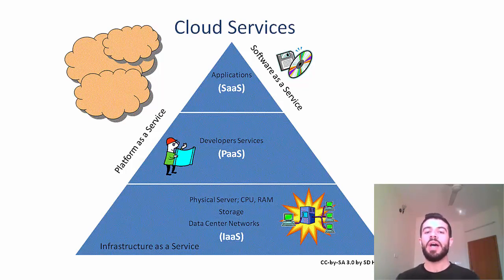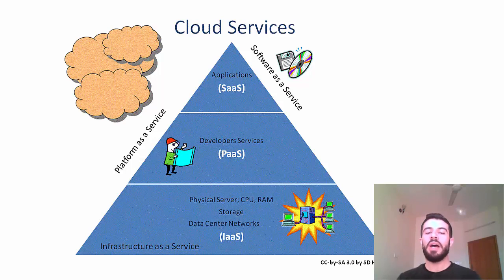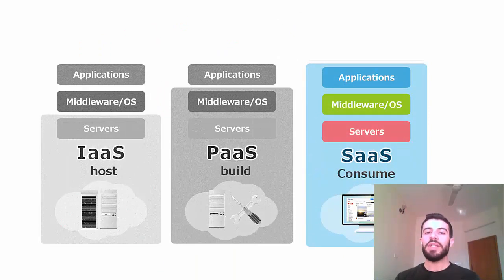The first is SaaS, or S-A-A-S, which means Software as a Service. We also have PaaS, or P-A-A-S, which means Platform as a Service. And we also have IaaS, or I-A-A-S, which means Infrastructure as a Service. What is the difference between these services? First of all, SaaS or Software as a Service means — from its name — instead of using the software installed on my computer, such as Microsoft Word or any type of software.